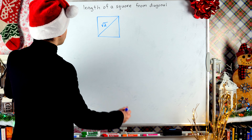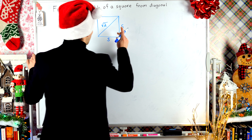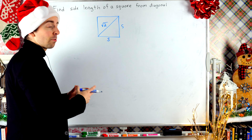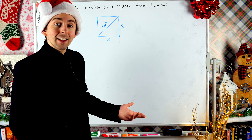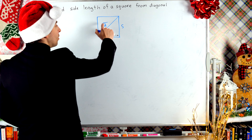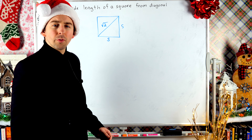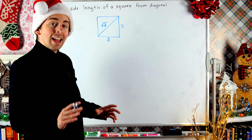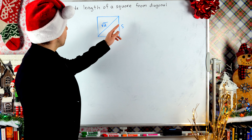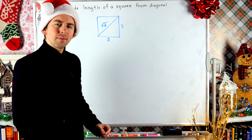Now, of course, finding the side length of a square is made easier by the fact that every side of a square has the same length. So we'll just call that length S. We know that the diagonal of this square is root 2, which is about 1.41. And with that information, we want to find the lengths of the sides.